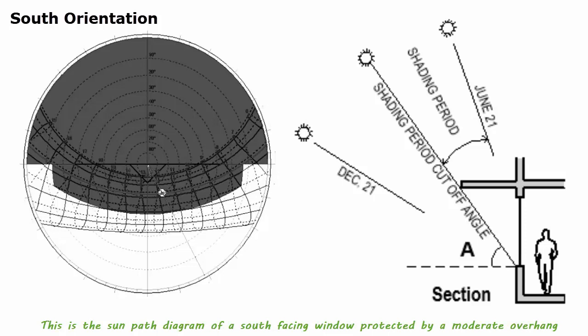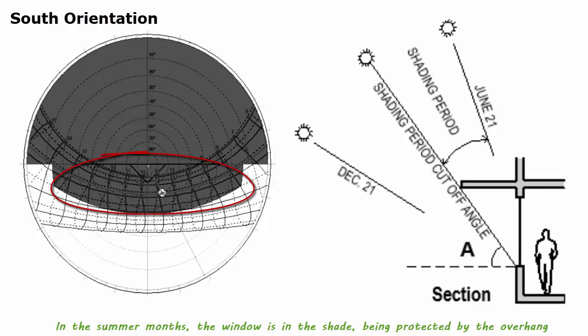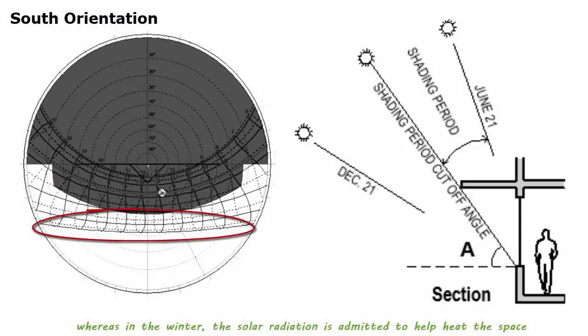This is a sun path diagram of a south-facing window protected by a moderate overhang, as shown in this diagram. In the summer months, the window is shaded being protected by the overhang, whereas in the winter, the solar radiation is emitted to help heat the space.